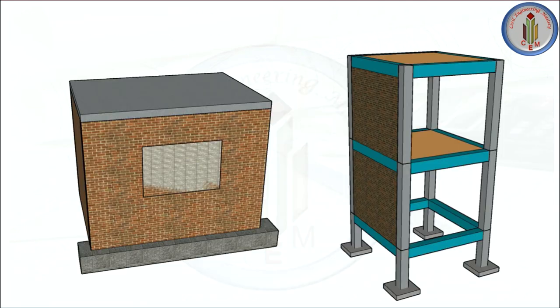Let's look at the components of each structure. Load bearing structure has a slab, wall, and foundation — the load from slab transfers to wall and then to foundation, with walls as the major load carrying element. Walls may be brick or stone depending on the material used. Frame structure has a slab, beam, column, and footing.